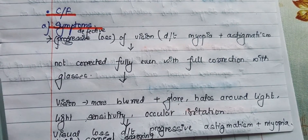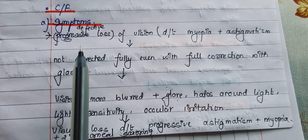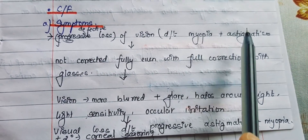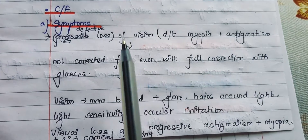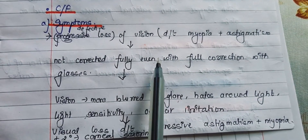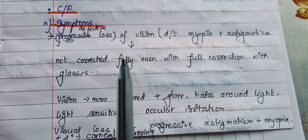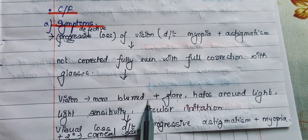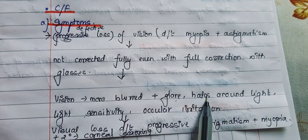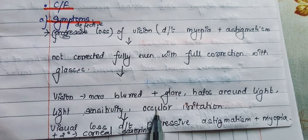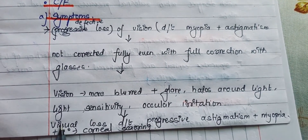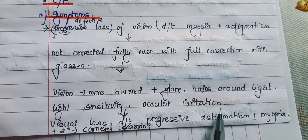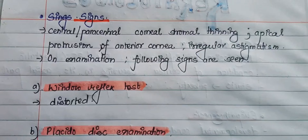Clinical features: The person initially has defective vision due to progressive myopia and astigmatism. This defective vision is not corrected fully even with full spectacle correction. With time, the vision becomes more blurred and is associated with glare, halos around lights, light sensitivity, and ocular irritation. Ultimately, visual loss occurs primarily due to progressive astigmatism and myopia, and secondarily due to corneal scarring.